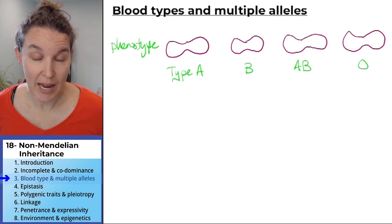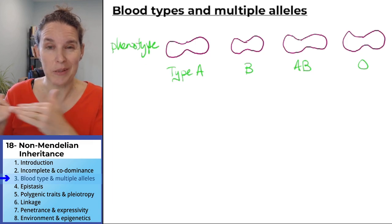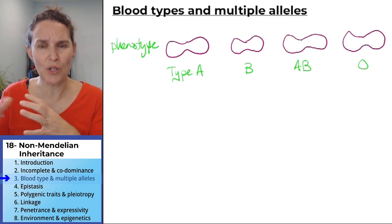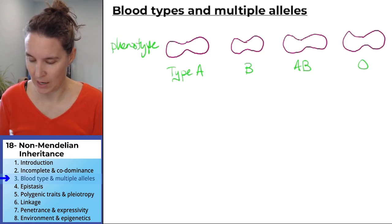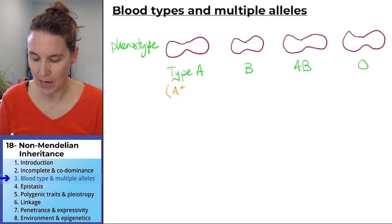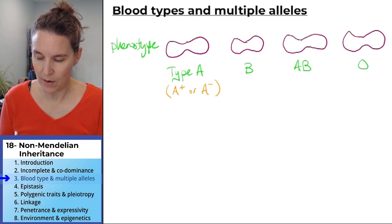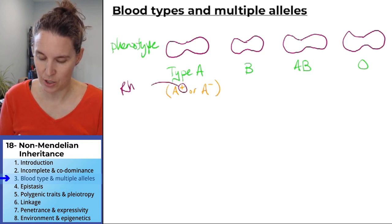It's the RH factor. And the RH factor adds a plus or a minus to your blood type. So actually, and I said I wasn't going to do this, but I can't help it. Type A blood can be A positive or A negative, where the positive and the negative piece is the RH factor.